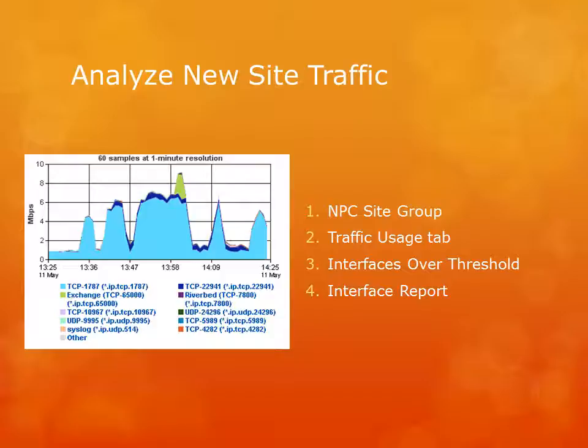By looking at this stack trend plot, I can tell exactly what's going on at that site and whether I'm reaching my bandwidth limit. If someone told me that only half the users at this site are currently online and within a few weeks the other half will be coming online, I would say we're probably going to have problems — we could expect twice as much of that 1787 traffic, which would cause congestion on the WAN link. So we'd want to talk about WAN compression, more bandwidth, or whatever other mitigation efforts we can employ.